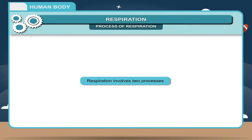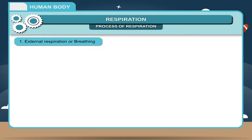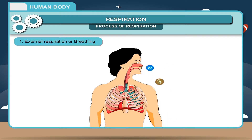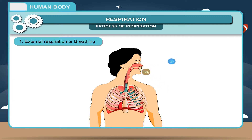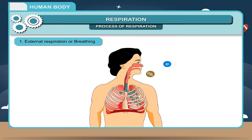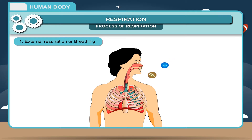Process of Respiration: Respiration involves two processes. 1. External respiration or breathing: It involves inhalation — air taken in — and exhalation — air expelled out. In this process, air containing oxygen is taken in and air containing carbon dioxide is expelled out.